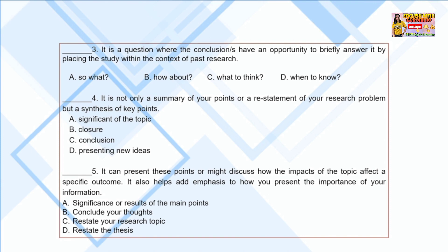Number 4: It is not only a summary of your points or a statement of your research problem, but a synthesis of key points. A. Significance of the topic, B. Closure, C. Conclusion, D. Presenting new ideas. Number 5: It can present these points or discuss how the impacts of the topic affect a specific outcome, and helps add emphasis to how you present the importance of your information. A. Significance or results of the main points, B. Conclude your thoughts, C. Weaker research, D. Wanting to look at other areas of the study.